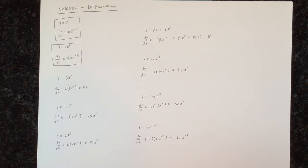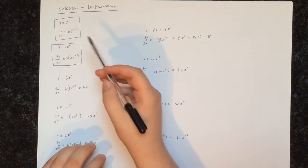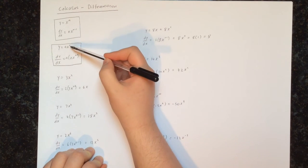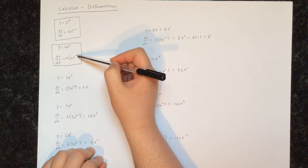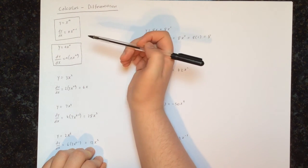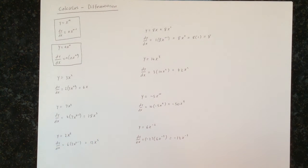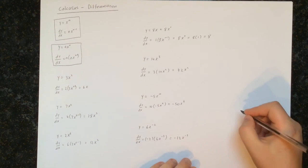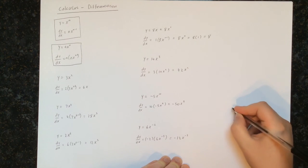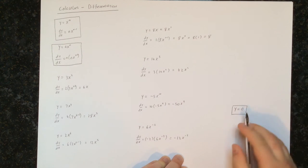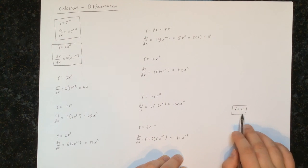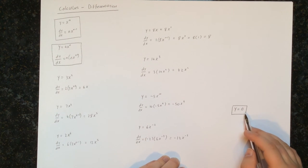In this video, we've seen how to calculate the derivative of something in the form ax to the power of n, and we've seen that we do it exactly the same way as before — multiplying by the power and reducing the power by 1. In the next video, we're going to look at what happens if we don't have an x term, so we have something like y equals some constant a — for example y equals 5, y equals 7, or y equals 23. How do we calculate the derivative of that?